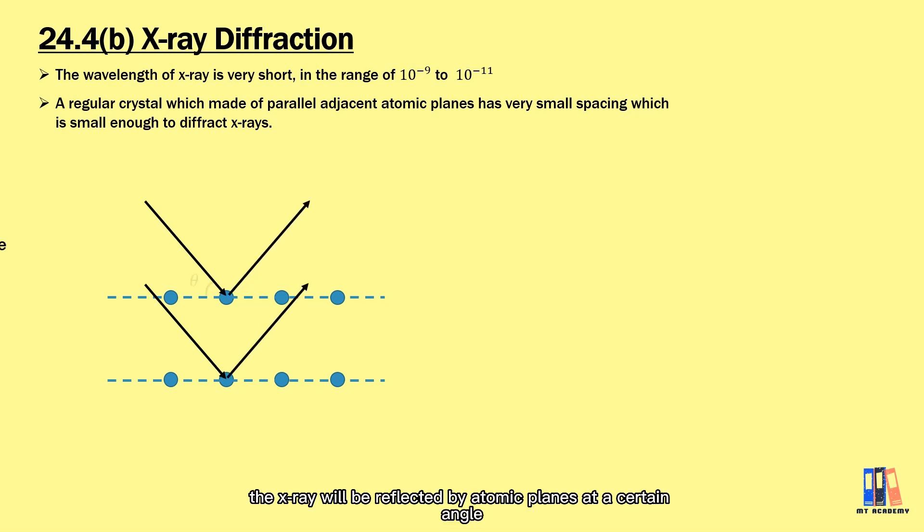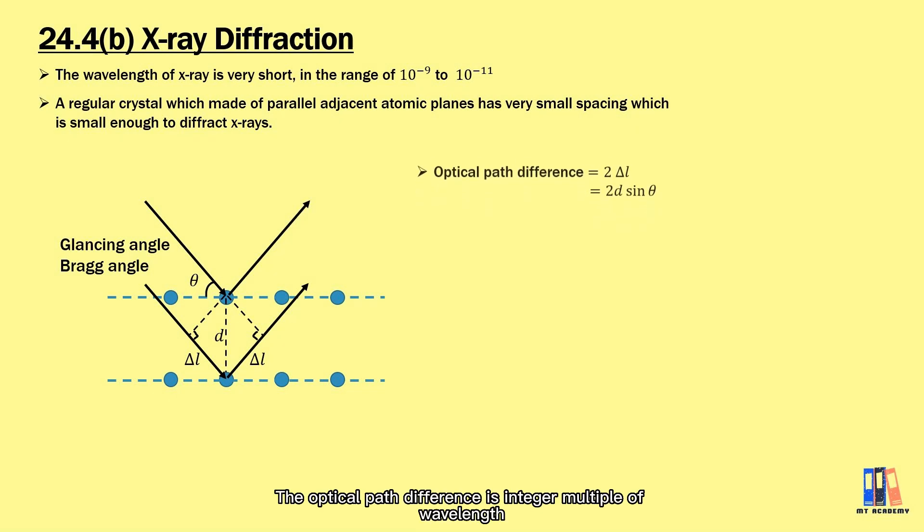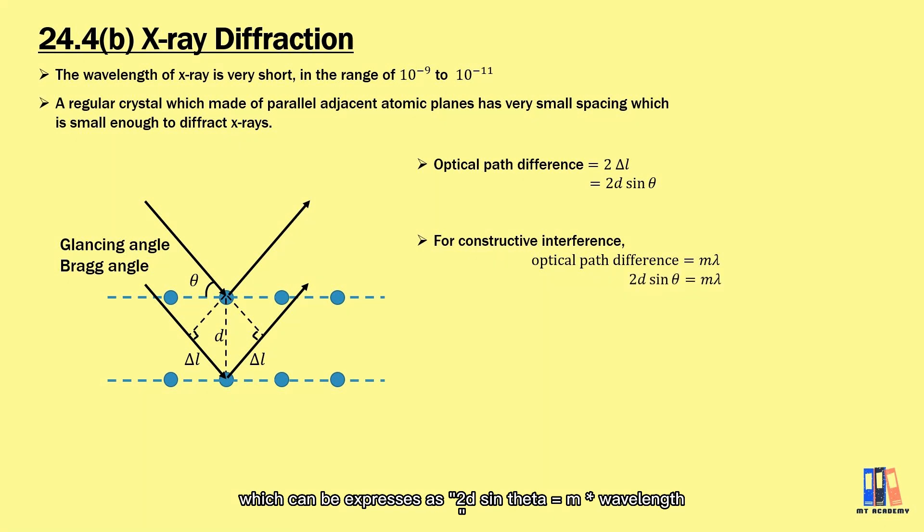Basically, the X-ray will be reflected by the atomic planes at a certain angle, which is known as glancing angle or Bragg angle. You may refer back to what you have learned about optical path difference and also constructive interference before. The diffraction pattern can be produced when reflected X-rays interfere constructively. The optical path difference is integer multiple of wavelength, which can be expressed as 2d sin θ equal to mλ, where d is the spacing between two atomic planes and m is the order of diffraction.